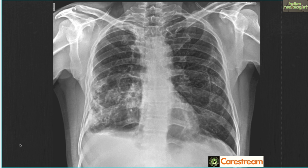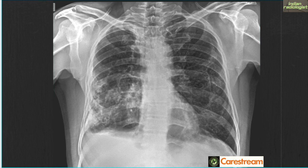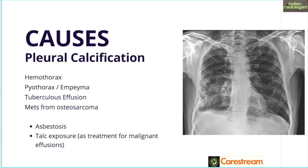What we see is dense calcific areas seen at the right costophrenic angle. The costophrenic angle is blunted and you can see calcification extending upwards. There is also a little streak of calcification on the left side. This is pleural calcification. Causes of pleural calcification are usually hemothorax, pyothorax, empyema, as well as tuberculous effusions. Rarely, metastases from osteosarcoma can also give rise to pleural calcification.